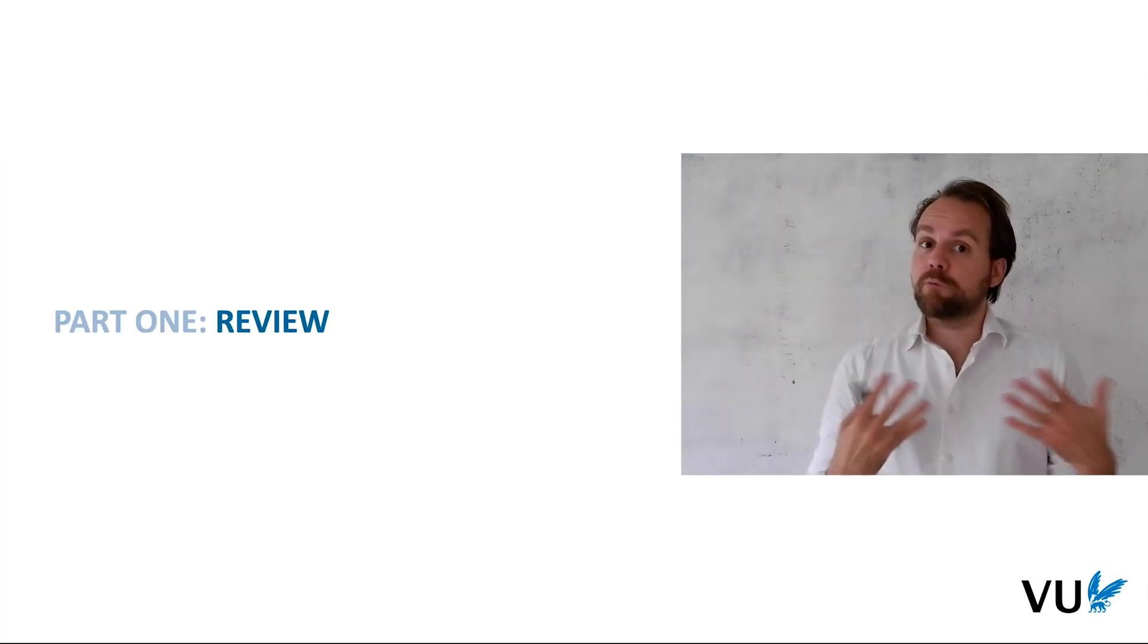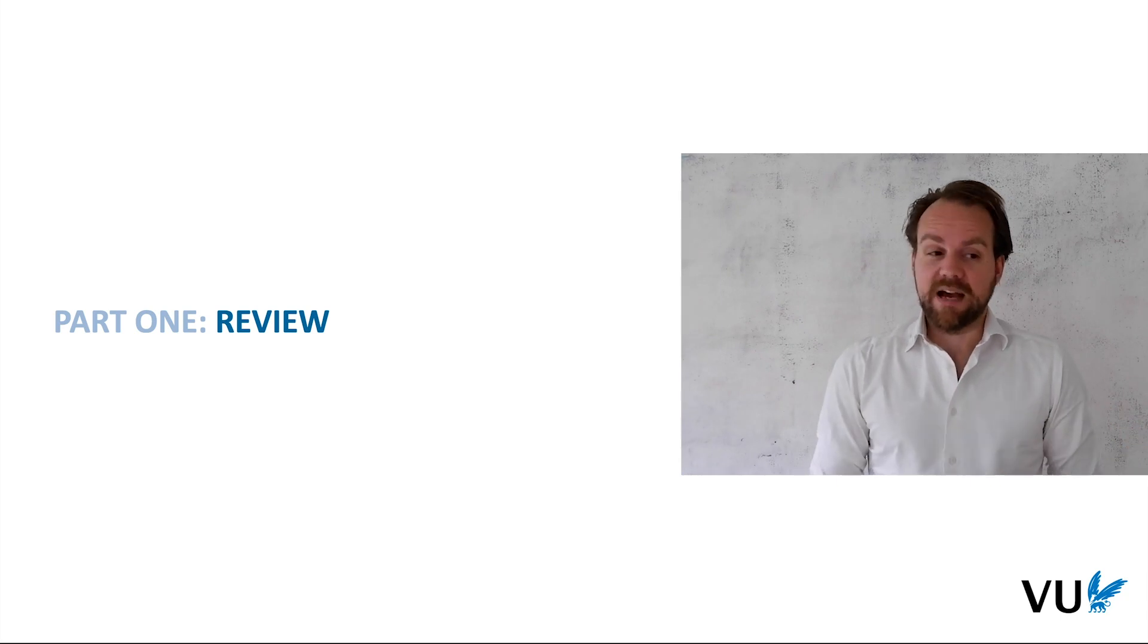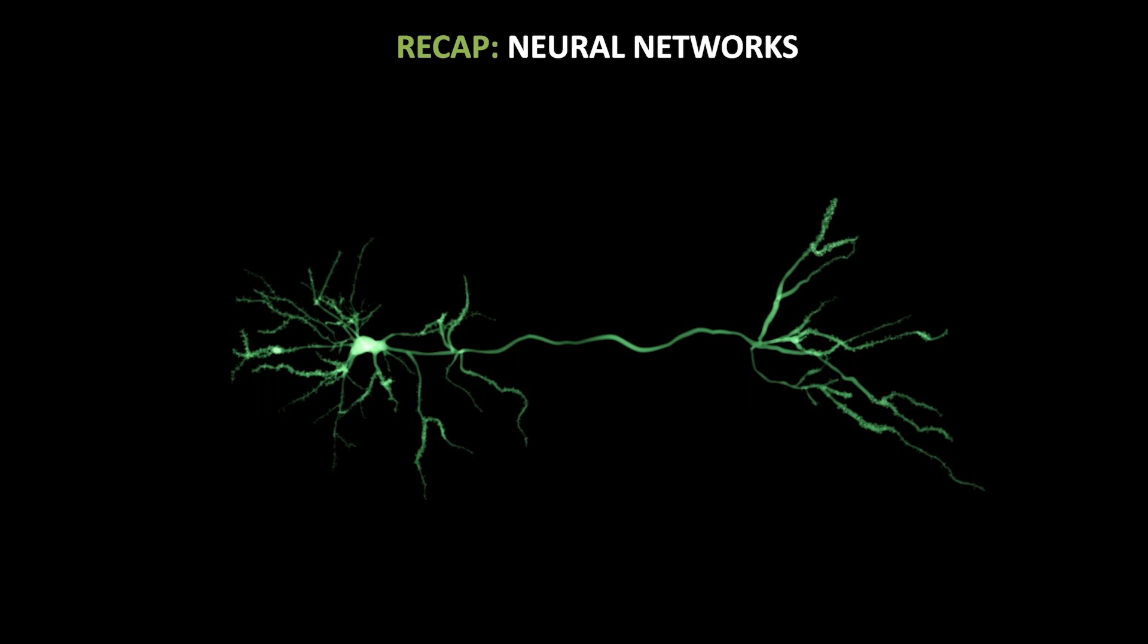So let's start with the first part, a review of what neural networks are and how they work in general. Neural networks started in the 1950s when researchers had the idea that the brain is the only truly intelligent system we know. So let's see how the brain works and take some inspiration from that. This is one cell, one brain cell, called a neuron.